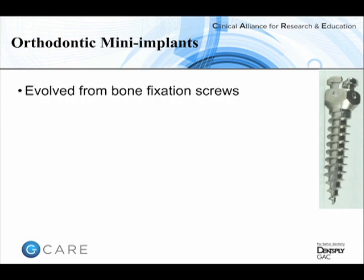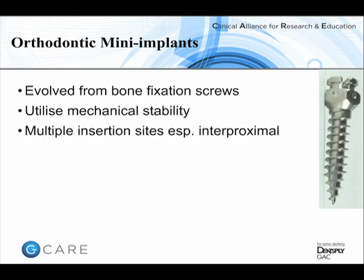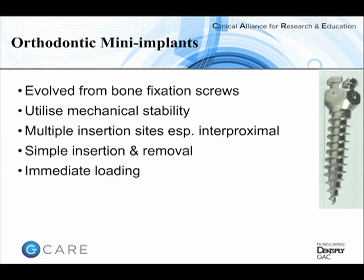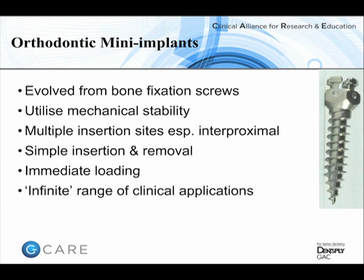Having evolved from bone fixation screws and relying on mechanical stability, one of the beauties of mini-implants is that their small size means they can be placed in almost any location in the mouth, particularly interproximal sites. They are simple to remove and insert, which is good from both the orthodontist's and the patient's perspective. Because we're not relying on osseointegration, traction can be applied immediately after insertion, and the more an orthodontist uses mini-implants, the wider the range of applications that become apparent.